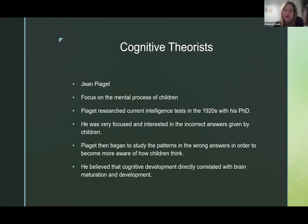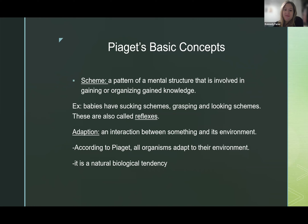We have some cognitive theorists to talk about — back to Jean Piaget. He focuses on the mental processes of children. He researched intelligence tests from the 1920s while completing his PhD. He was very interested in incorrect answers given by children, as opposed to correct ones, because he felt you could find patterns in the wrong answers to become more aware of how children actually think. He also believed that cognitive development directly correlated with brain maturation. One of Piaget's basic concepts is schema — a pattern of mental structure involved in gaining or organizing knowledge. For example, babies have sucking schemas, grasping schemas, and looking schemas at their mom — these are also called reflexes.